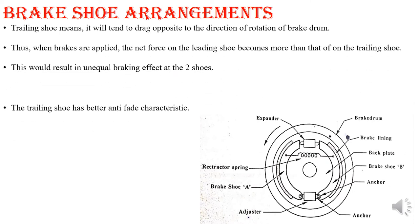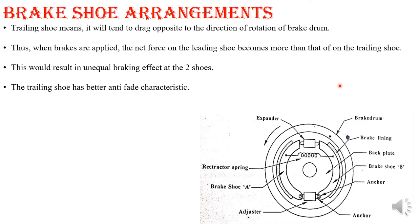The first type is the fixed expander type. It consists of one brake drum, a brake plate on which all the assembly is mounted, an expander where force is applied through the brake pedal, brake shoe A and brake shoe B, brake lining on the outer periphery of each shoe that comes into contact with the wheel rim, and an adjuster and anchors. The brake drum rotates in one direction; brake shoe A is called the leading shoe and brake shoe B is called the trailing shoe.